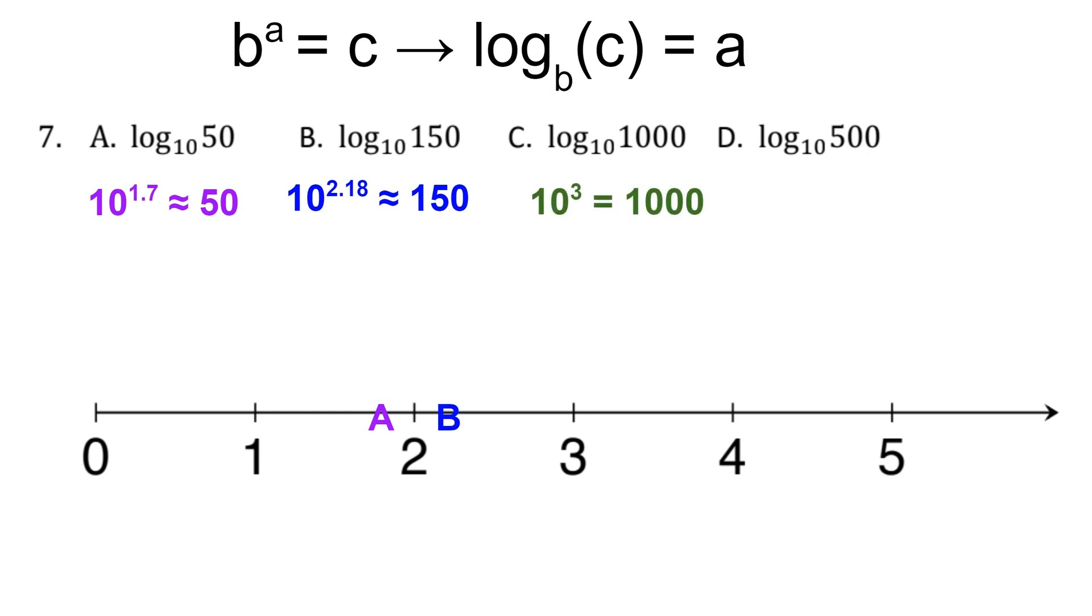10 to the third power equals a thousand exactly. So c is placed directly at 3. And then 10 to the 2.7 power is approximately 500. So d would fit in between 2 and 3.